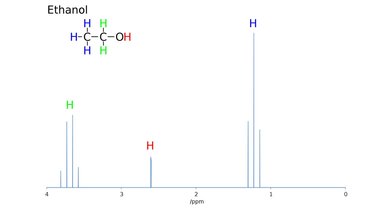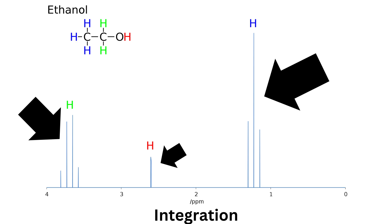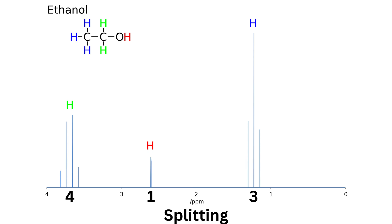When interpreting an NMR spectrum, you want to consider three things. One, chemical shift, which has to do with the location on the x-axis of the peak. Two, integration, which has to do with the height of the peak. And three, splitting, which has to do with the number of peaks in one cluster.